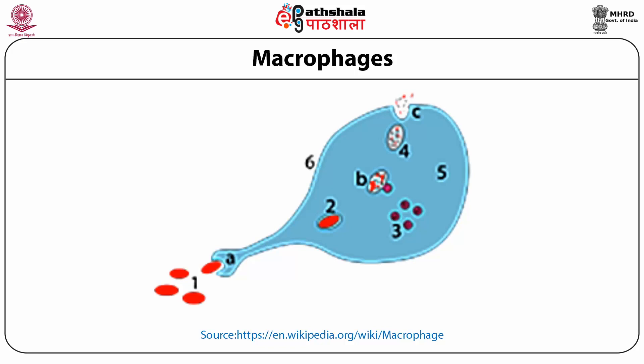Once digestion has taken place, a residual body is formed, which contains the digested material. This digested material is then secreted out by the process called exocytosis. At this stage, the antigen becomes associated with the MHC complex and is expressed on the cell surface during exocytosis — the antigen is complexed with the MHC molecule and expressed on the surface of the cell. This antigen-presenting cell will then present the antigen, complexed with the MHC molecule, to the T helper cells, thereby activating them to induce the immune response.